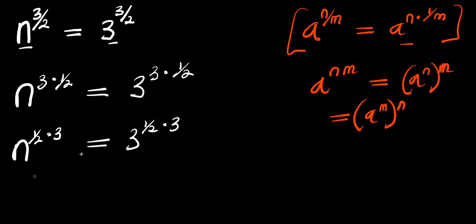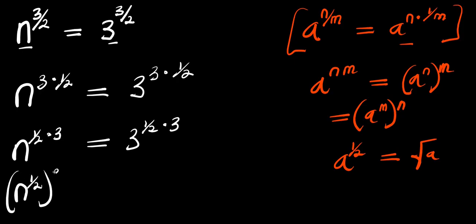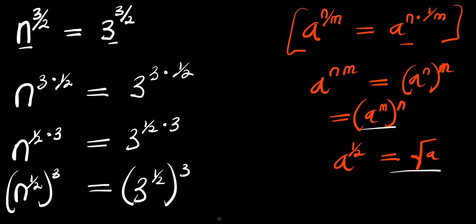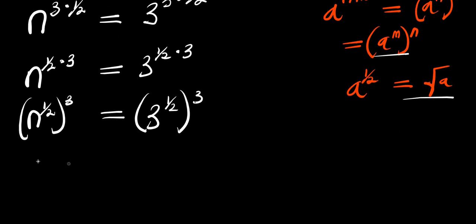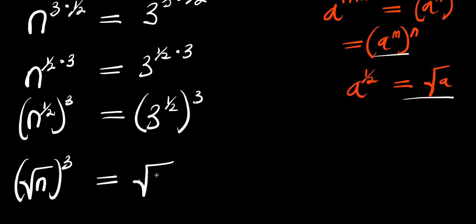And this also means: if you have a power 1 over 2, this is just like writing the square root. So applying that here, this is writing n power 1 over 2 raised to the power 3, and this equals 3 power 1 over 2 raised to the power 3. So we simply have the square root of n raised to the power of 3, and this equals the square root of 3 raised to the power of 3.